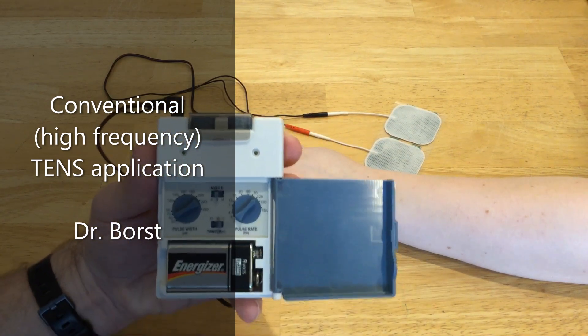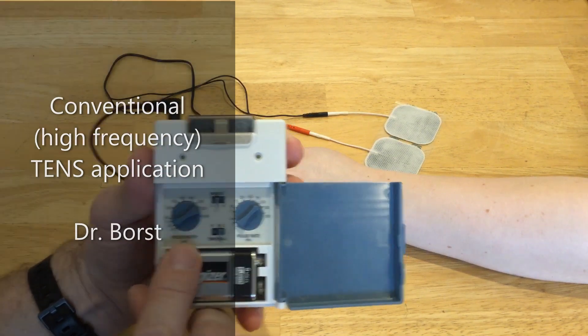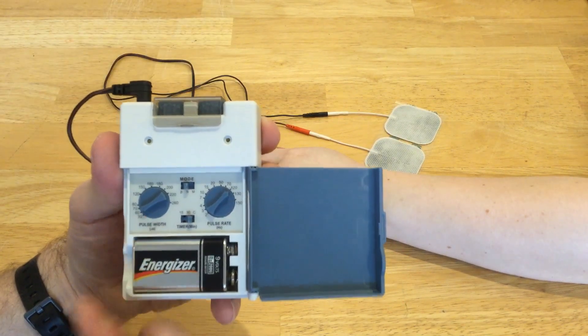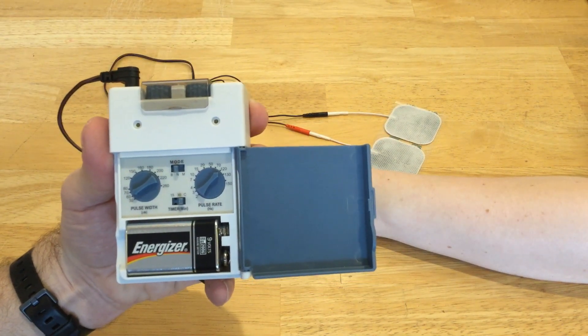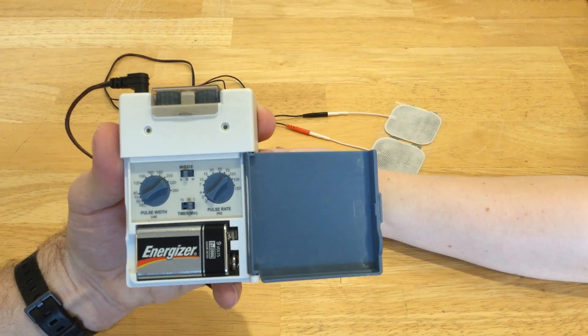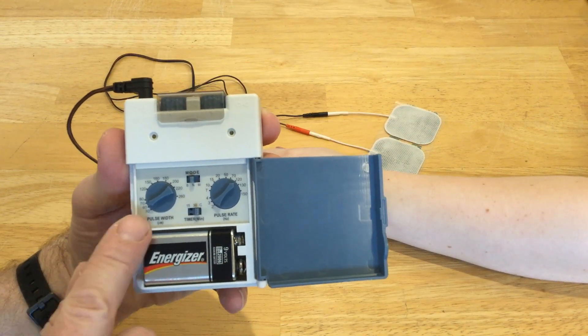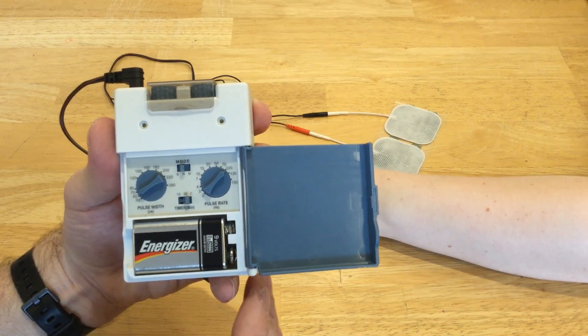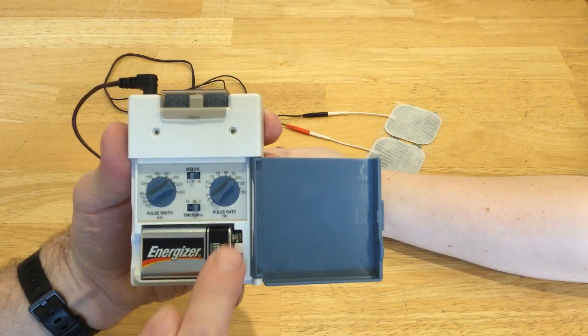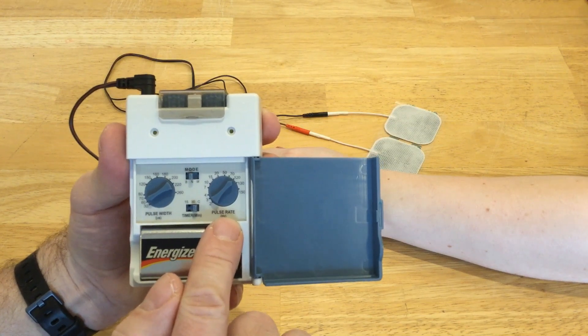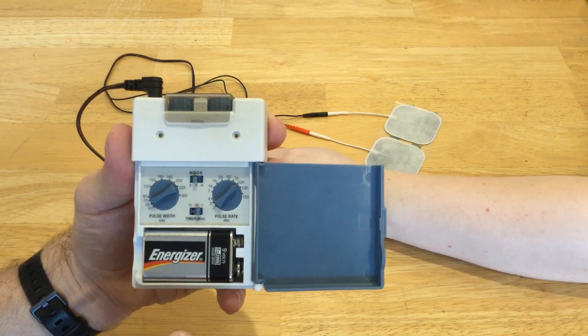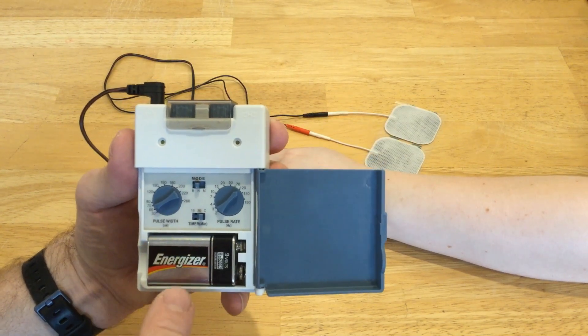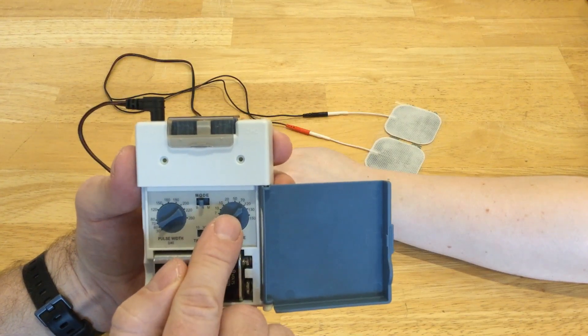For conventional TENS, you want your pulse width or pulse duration set between 50 and 80 microseconds. You can see here I have it at 60 microseconds. And you want your pulse frequency or pulse rate set between 100 and 150 hertz or pulses per second. You can see here I have it set at 120.